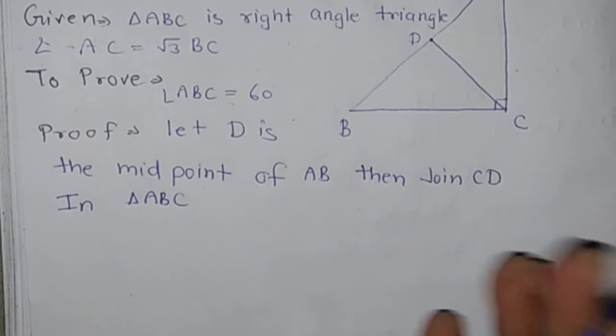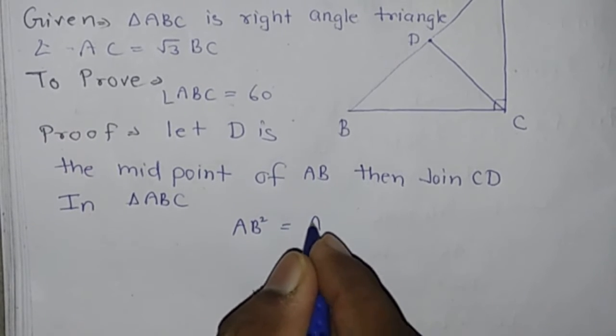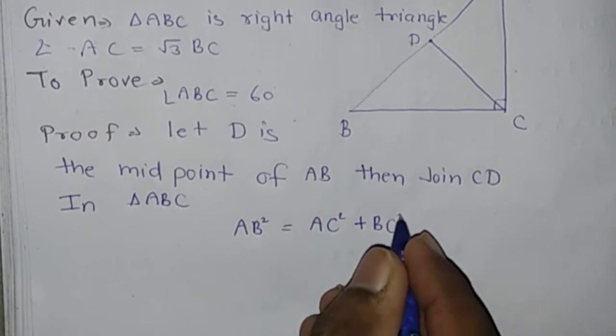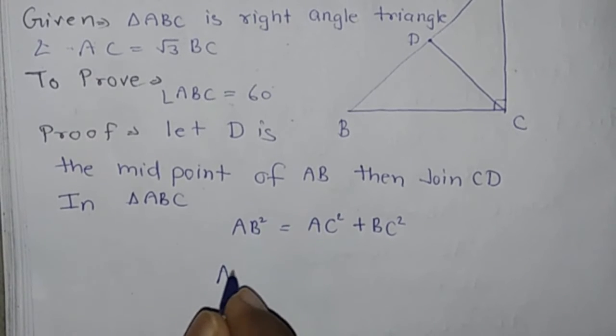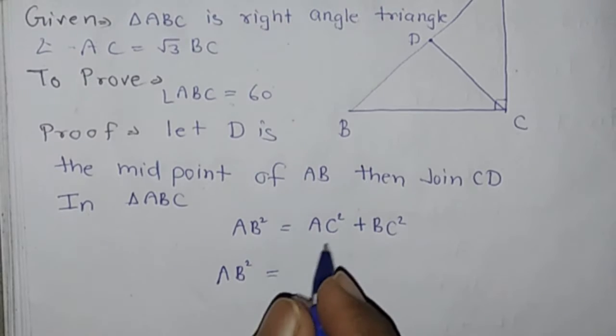In triangle ABC, by Pythagoras theorem we have AB square equals AC square plus BC square. AB square equals root 3 BC squared plus BC square, where AC equals root 3 BC.